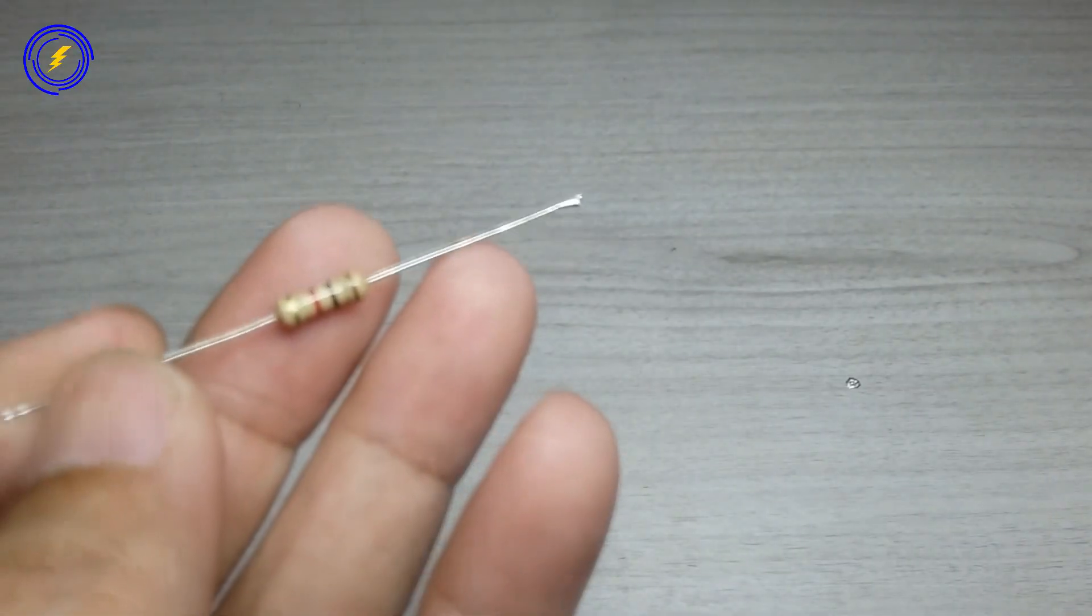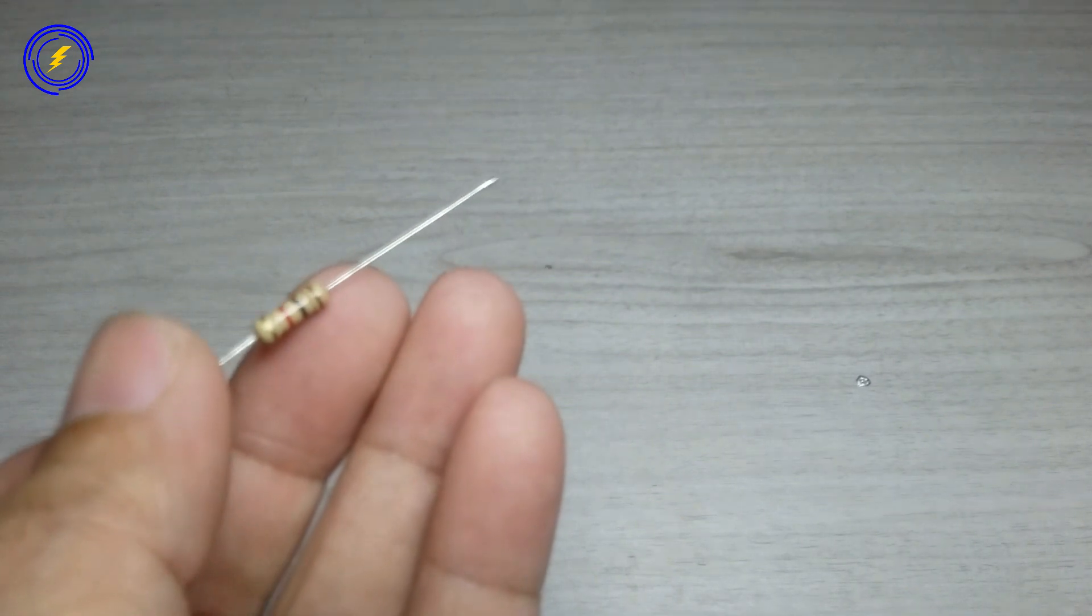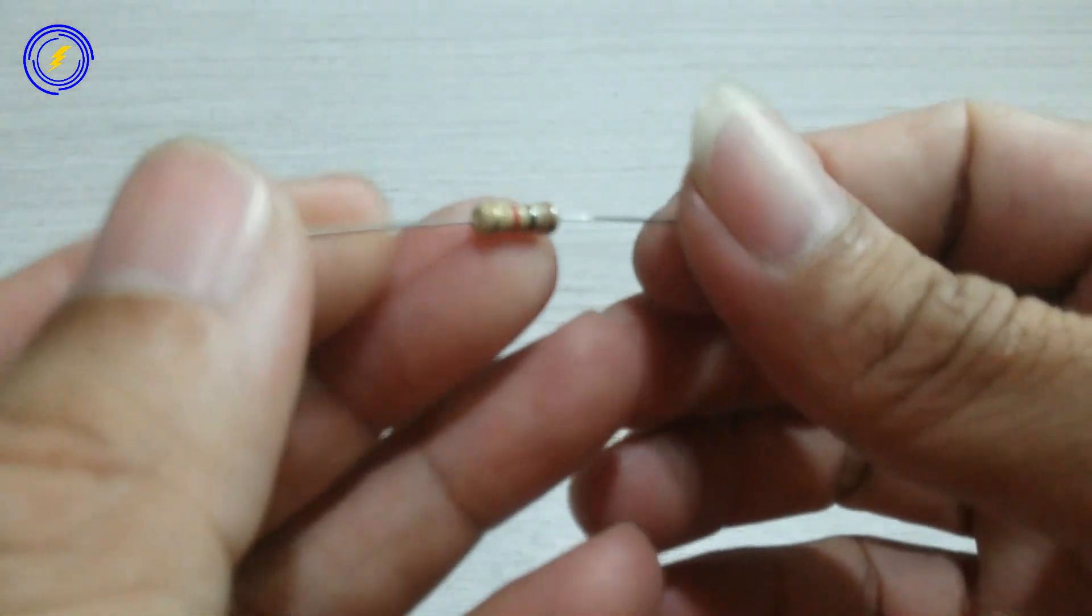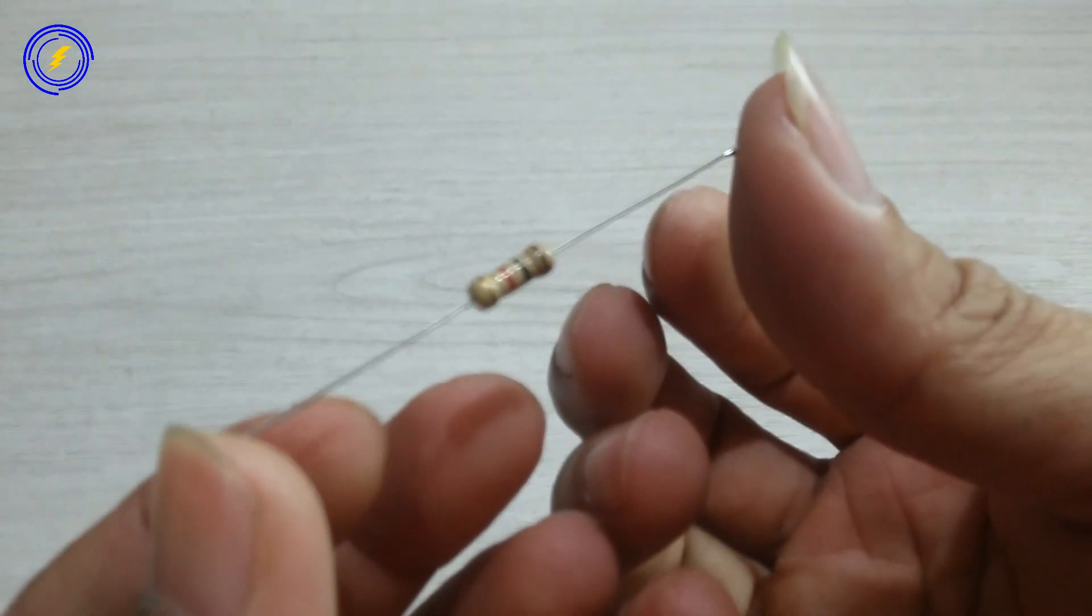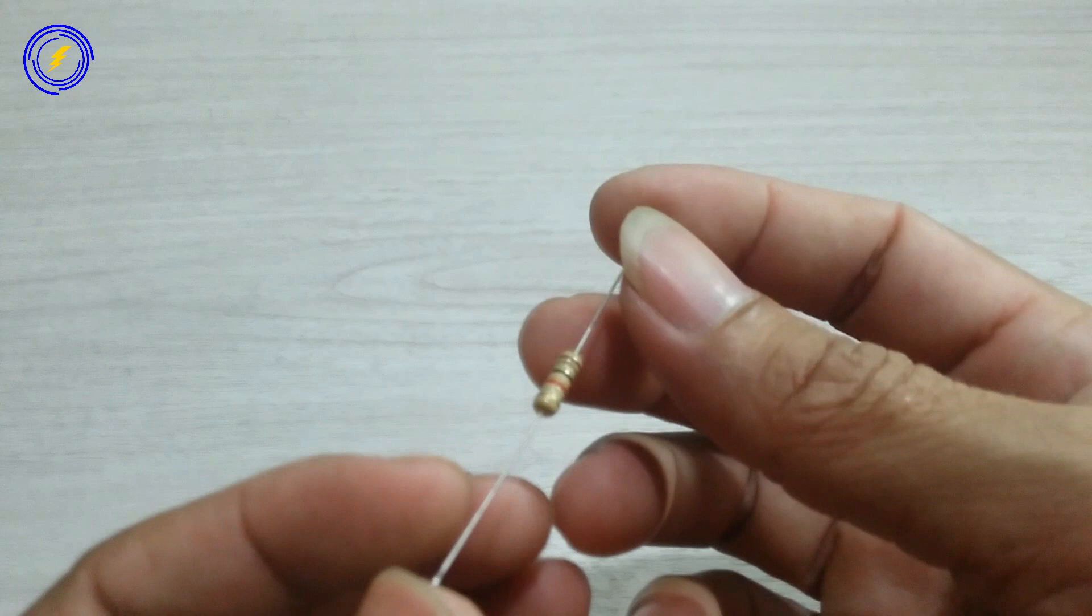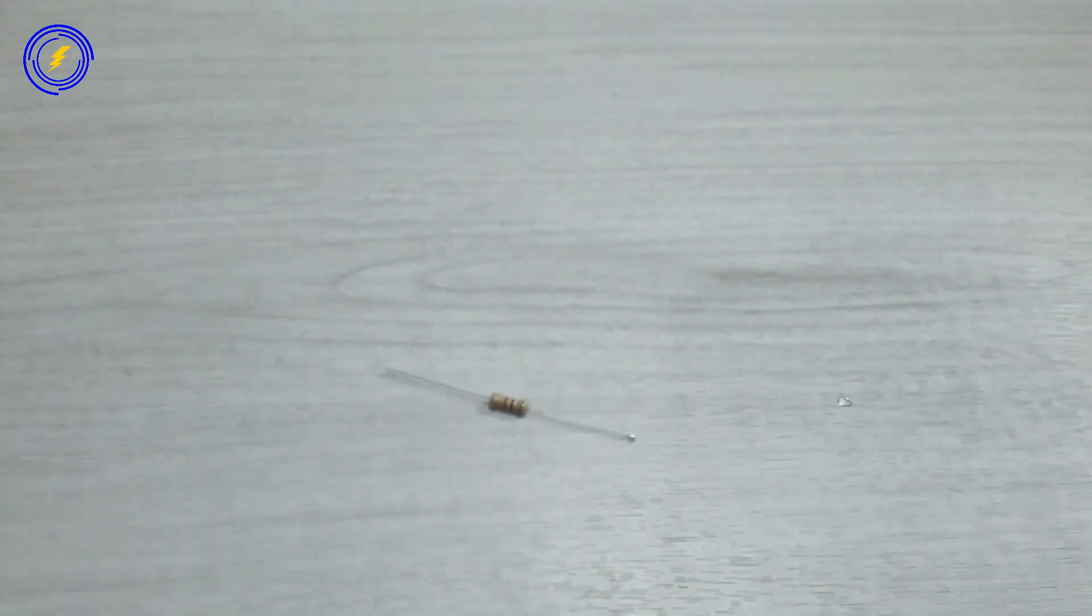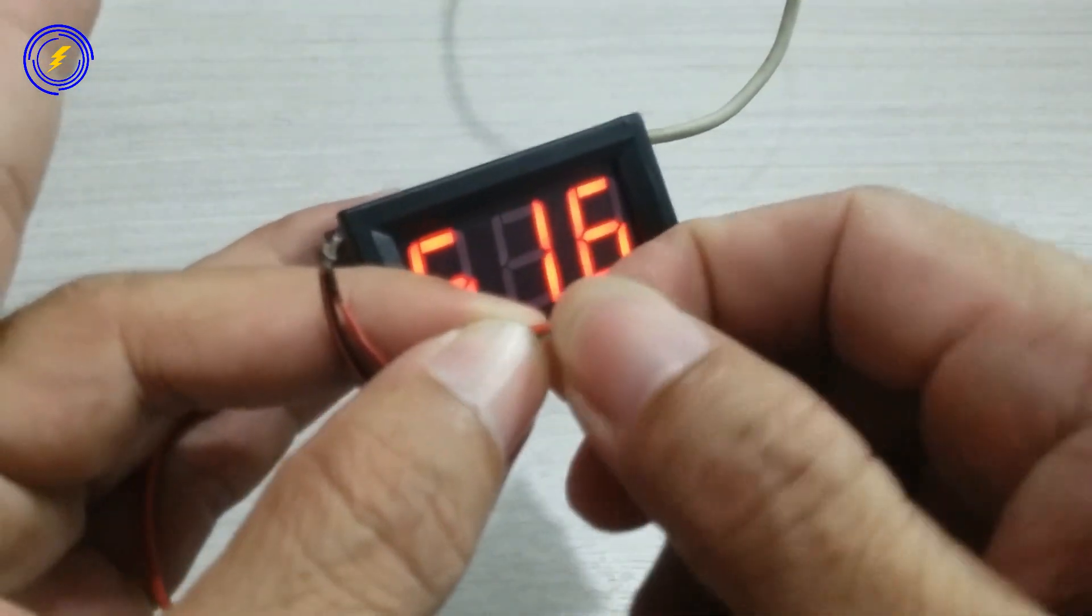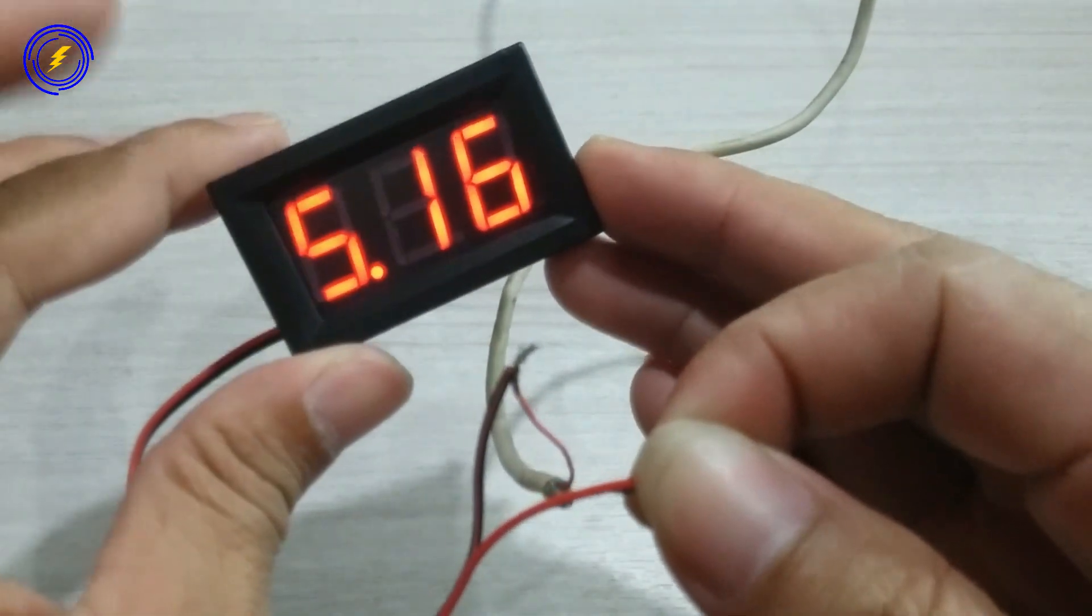Kita sediakan resistor 1 kilo ohm. Resistor ini nanti akan menggantikan resistor yang 0, 0, 0, SMD tadi. Sebelumnya kita akan coba dulu. Muncul angka.